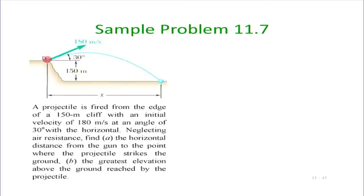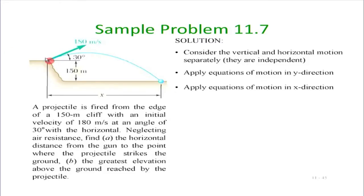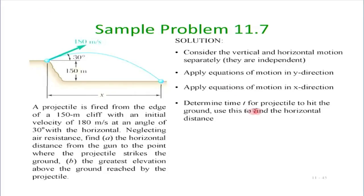We need to find the horizontal distance from the gun to where the projectile strikes the ground, and the greatest elevation above the ground — the maximum height during flight. Horizontal and vertical motions are independent. Initial velocity in y: 180·sin(30); initial velocity in x: 180·cos(30). The y-direction has initial velocity and gravitational acceleration; x-direction is uniform motion. We find the time for the projectile to hit the ground.